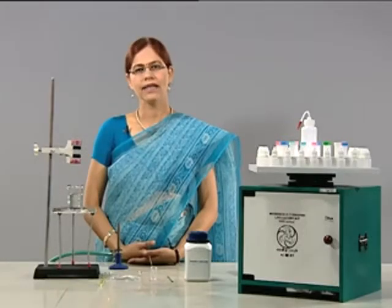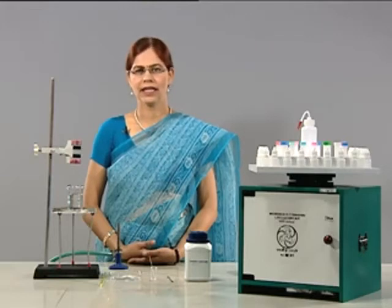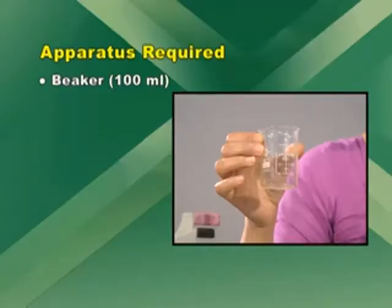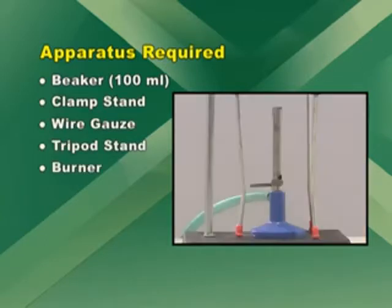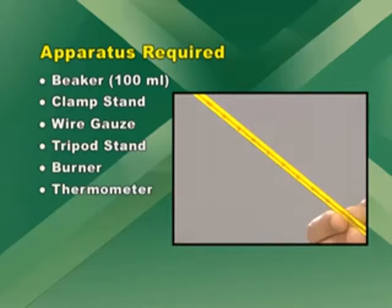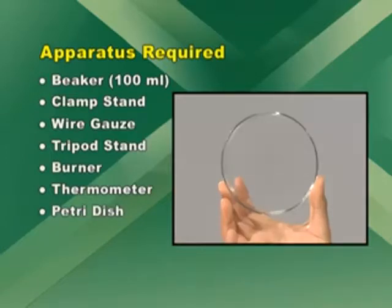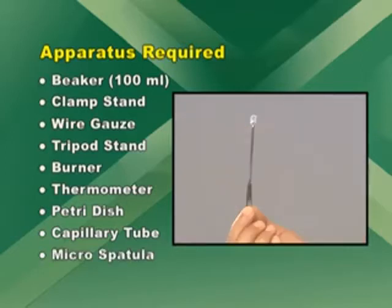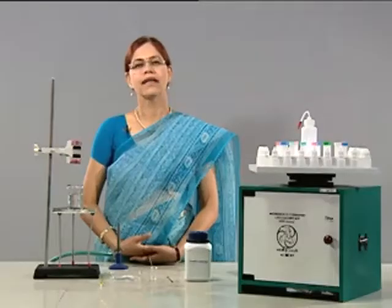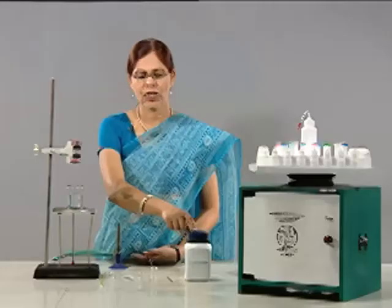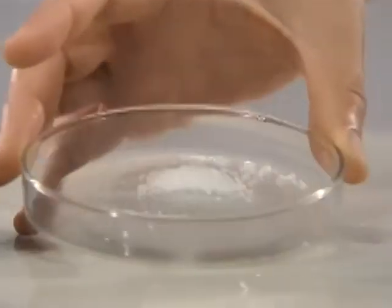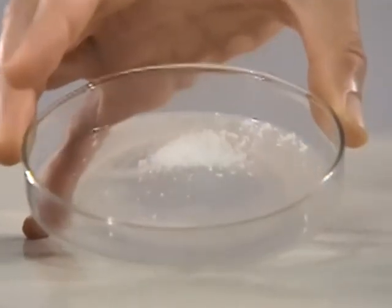The apparatus required for the experiment are: a beaker, a clamp stand, a wire gauze, a tripod, a burner, a thermometer, a petri dish, a capillary tube, and a micro spatula. The chemical required is an organic compound which we have already transferred to the petri dish with the help of a micro spatula.